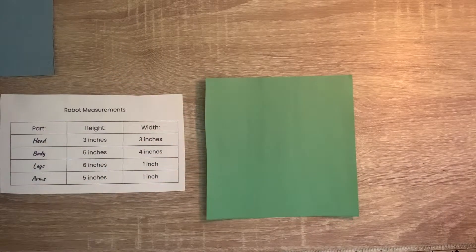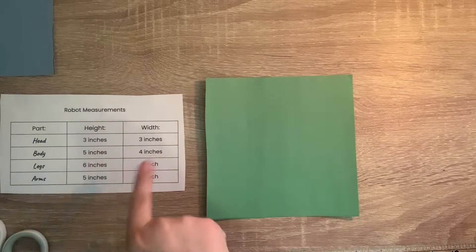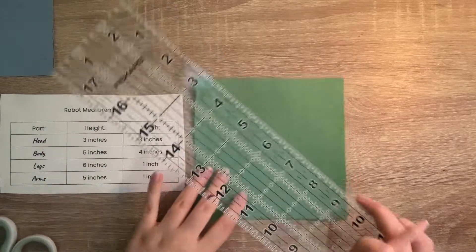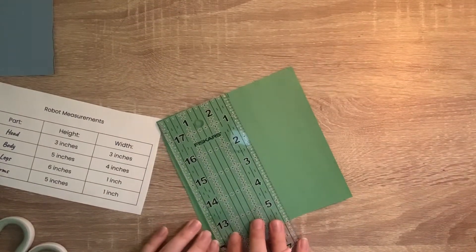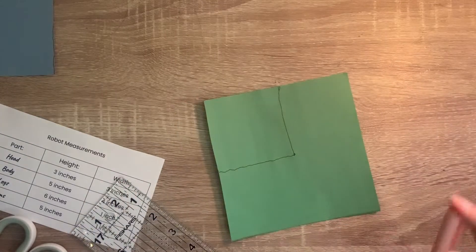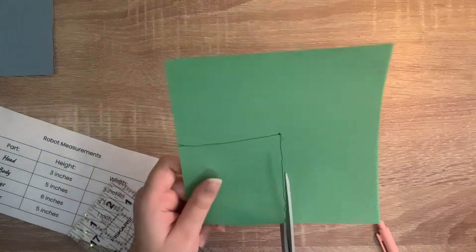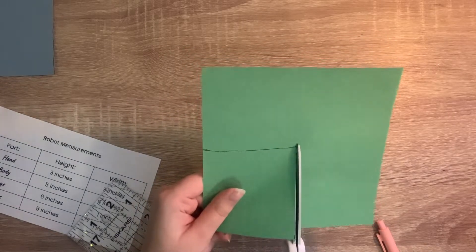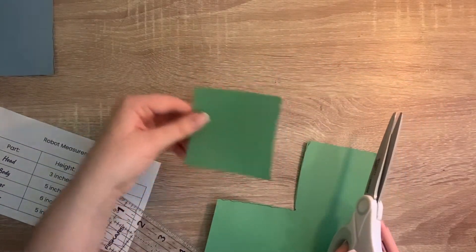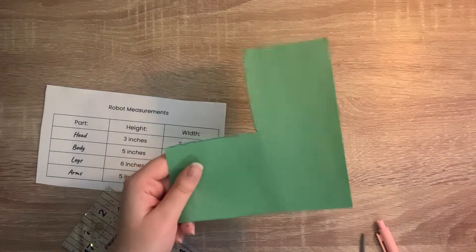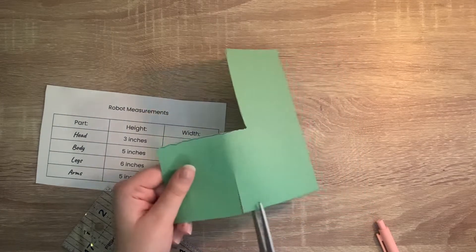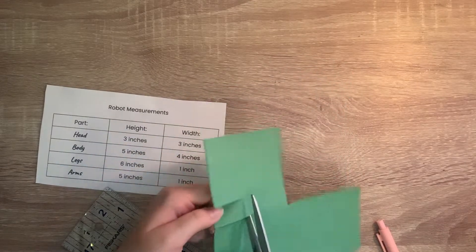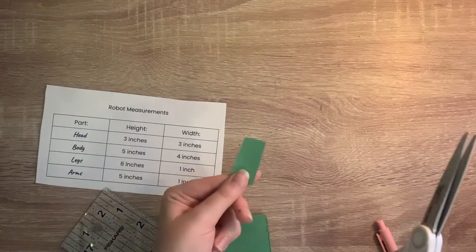Now we are going to create the head. It is 3 inches tall and 3 inches wide. Let's use our ruler. We are going to mark 3 inches across for the width. Now we are going to draw another dot for 3 inches tall and connect these. Again, we're going to cut out the head, making sure to be careful and asking an adult for help. Set this aside with the body. We are also going to use this leftover to create a small little square for the neck. It doesn't matter how big it is. You can create it however you'd like.